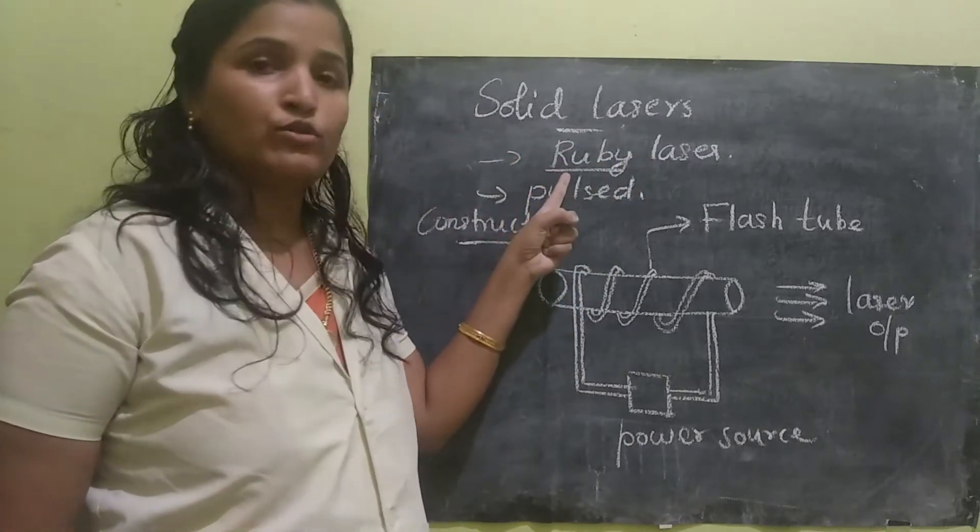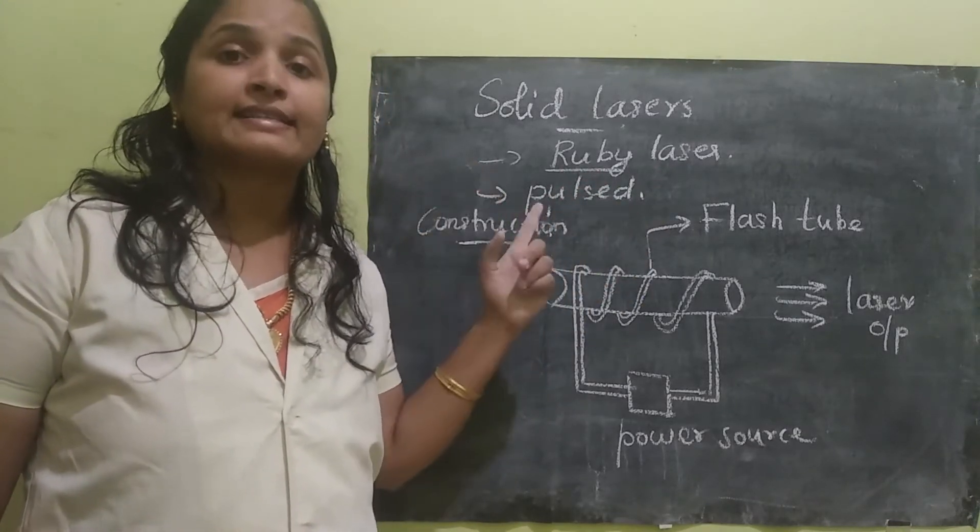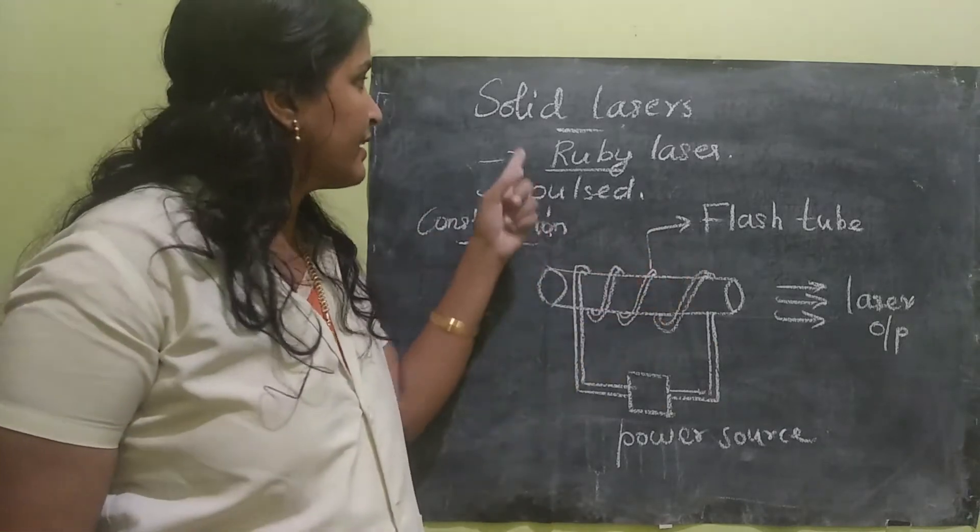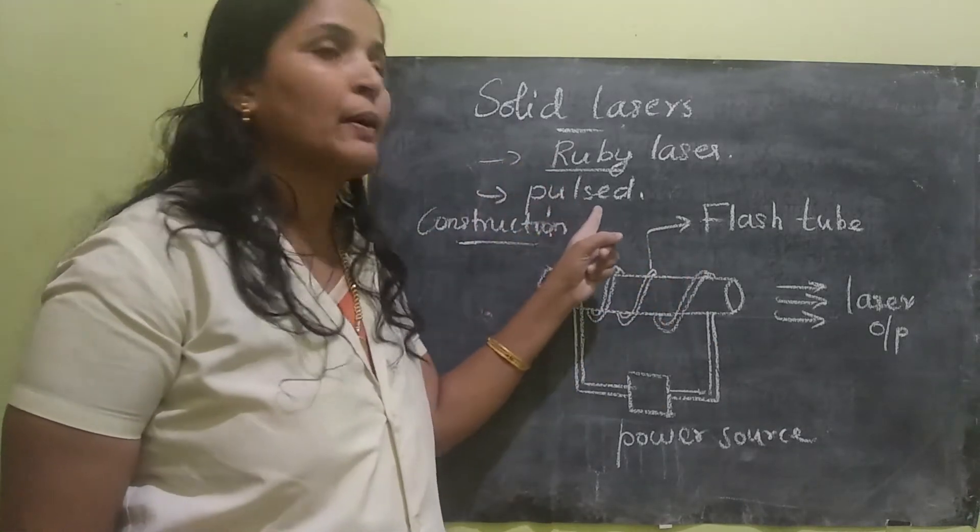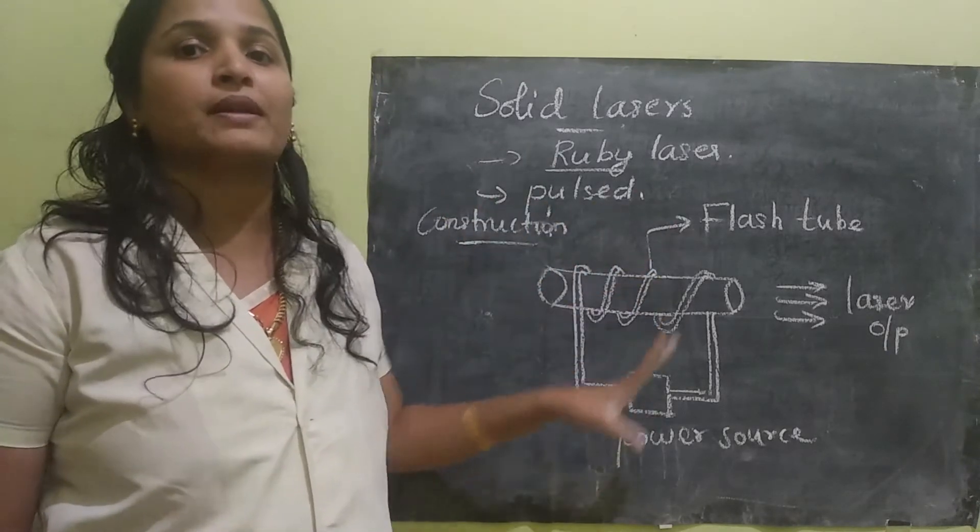The most commonly used solid laser is ruby laser. We know in gas lasers, it will emit continuous laser and here the solid lasers emit pulsed laser. That means the output of the laser will be in the form of pulses.